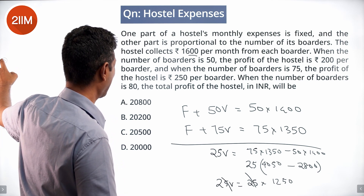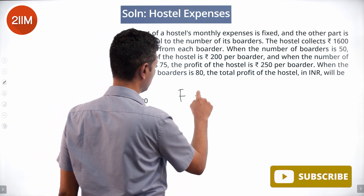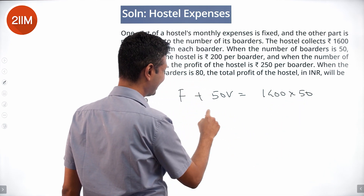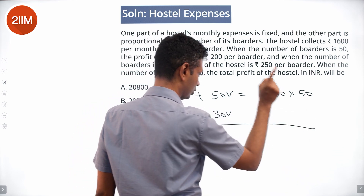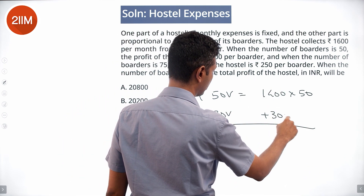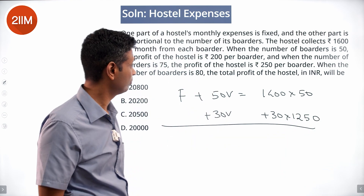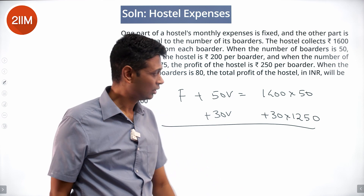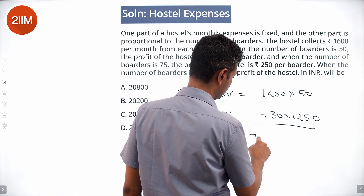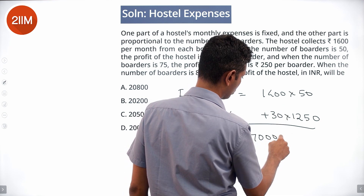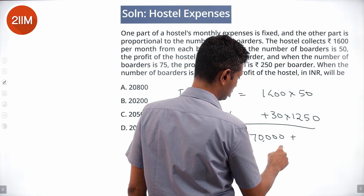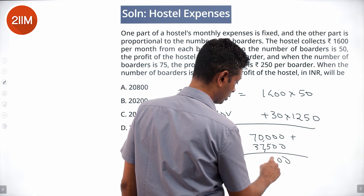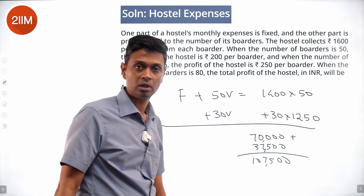Now we want to find F plus 80V. We know F plus 50V equals 1400 times 50, so we add another 30V. F plus 80V equals 1400 times 50 plus 30 times 1250. That gives us 70,000 plus 37,500, which equals 107,500. That is the total cost when there are 80 boarders.